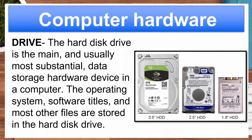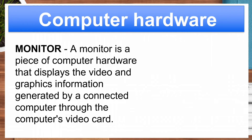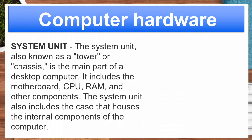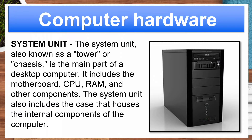Drive. The hard disk drive is the main and usually most substantial data storage hardware device in a computer. The operating system, software titles, and most other files are stored in the hard disk drive. Monitor. A monitor is a piece of computer hardware that displays the video and graphics information generated by a connected computer through the computer's video card. System unit. The system unit, also known as a tower or chassis, is the main part of a desktop computer. It includes the motherboard, CPU, RAM, and other components, as well as the case that houses all internal components.